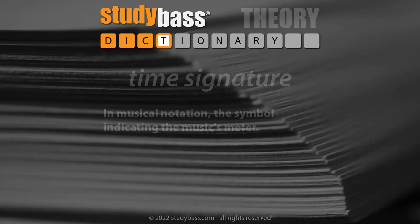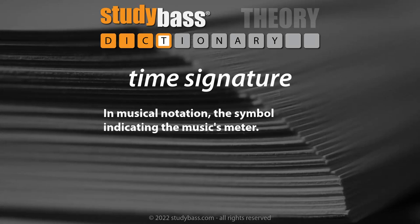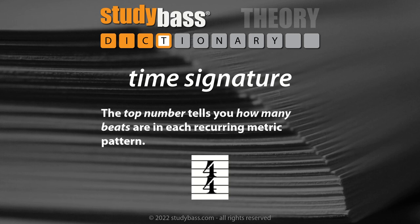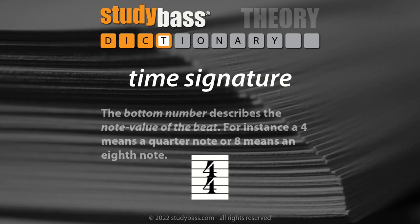Time signature. In musical notation, the symbol indicating the music's meter. Time signatures typically have a top and bottom number. The top number tells you how many beats are in each recurring metric pattern. The bottom number describes the note value of the beat. For instance, a four means a quarter note, or eight means an eighth note.